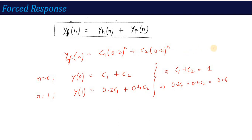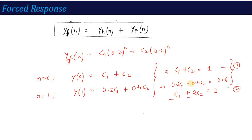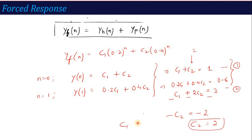To solve the two equations, divide the second equation by 0.2, giving C₁ + 2·C₂ = 3. Subtracting equation 1 from this: C₂ - 2·C₂ becomes -C₂ = 1 - 3 = -2, so C₂ = 2. Substituting C₂ = 2 back into equation 1 gives C₁ = -1.